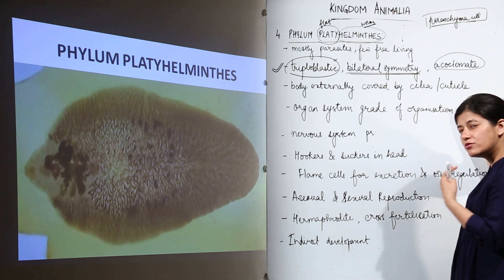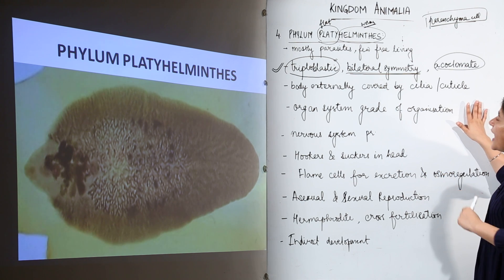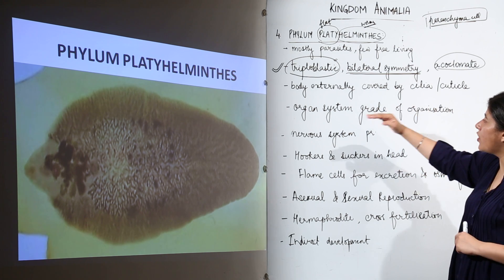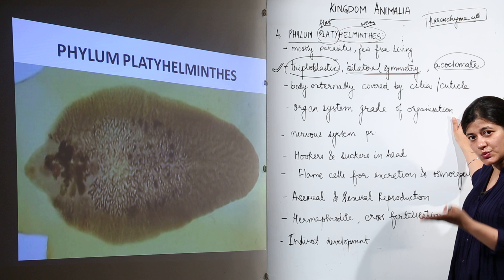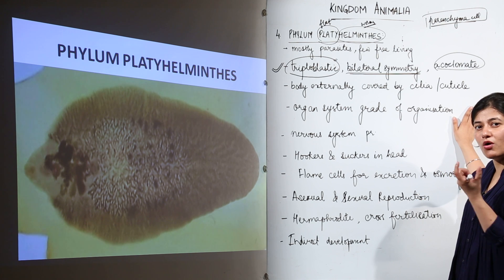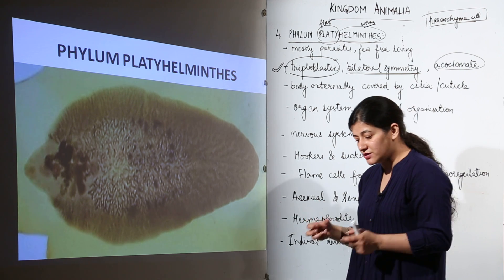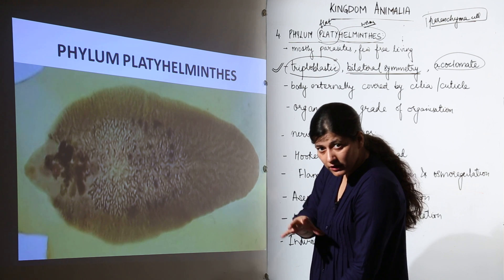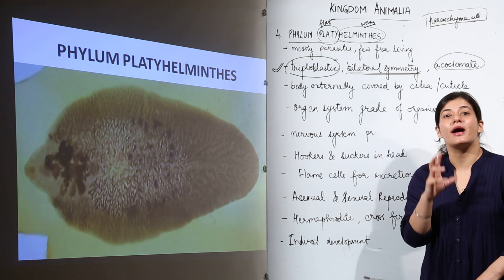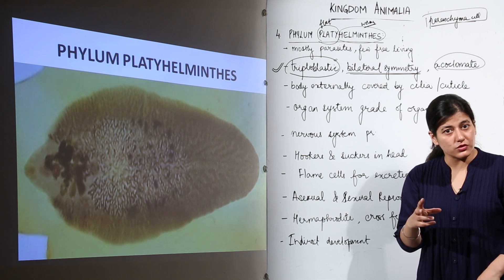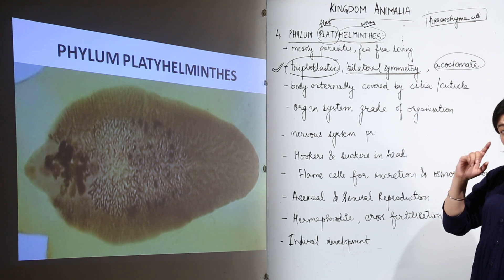The body is externally covered by cilia or cuticle. These organisms have a cuticularized body — you can see that this body has a cuticle layer outside it. There is organ system grade of organization, which is not as advanced as we will see in later phylums, but organs are present — such as hooks and suckers in the head.